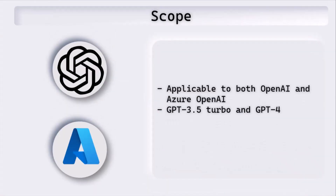Back to the slides. The scope of this bot is applicable to both OpenAI and Azure OpenAI. However, in this particular sample we are using OpenAI only, but it can be changed to Azure OpenAI very easily. The OpenAI models to which the sample is applicable are GPT-3.5 Turbo and GPT-4. Those can be changed in the configuration, which we'll have a look at in a minute.